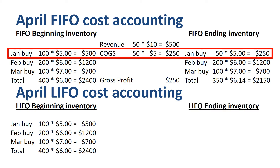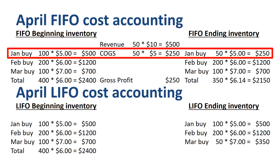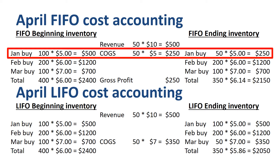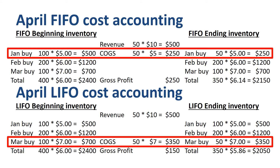With LIFO — last in, first out — we assume that the newest inventory gets sold first, so we assume that the box sold originated from the March buy. What remains in inventory at the end of April is the full 100 units from the January buy, the full 200 units from the February buy, and the remaining 50 units from the March buy. In total, 350 units with a total purchase price of $2,050, so on average $5.86 per unit. Under LIFO, the average cost per unit in inventory goes down in this example compared to the $6 previously. If we prepare the income statement for April: revenue is 50 units times $10 = $500; COGS is 50 units times $7 = $350; and gross profit is $150. Out of the March buy that was part of the beginning inventory, 50 units go to COGS and 50 units go to the ending inventory.